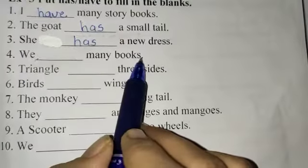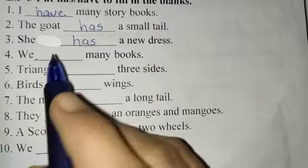Fourth, we blank many books. Here, this sentence is plural and we pronoun is given. With we use have.